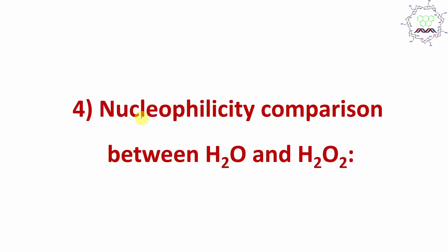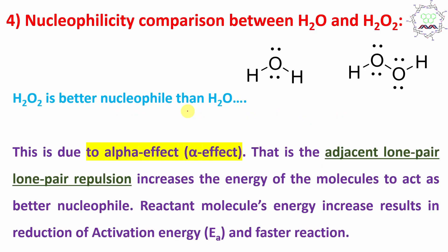The next part is a very interesting point: nucleophilicity comparison between hydrogen peroxide and water. Hydrogen peroxide is a better nucleophile compared to water. Why? Because the two adjacent lone pairs present on the oxygen atoms of H2O2 result in lone pair–lone pair repulsion, or electron–electron repulsion. This adjacent lone pair–lone pair repulsion is called the alpha effect, and it increases the energy of the reactant molecule.